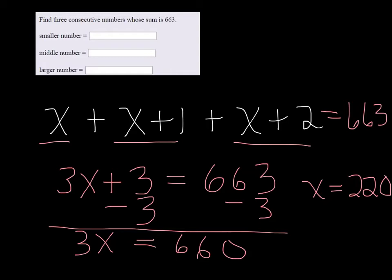So the first number is 220, the next one then would be 221, and the last one 222.